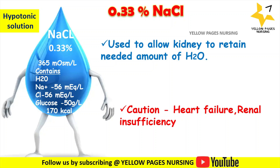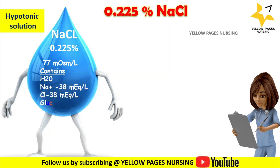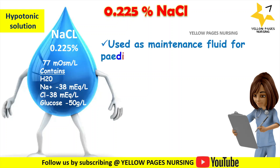The next example is 0.225% Sodium Chloride, also known as 5% Dextrose in 0.225% Sodium Chloride. Its osmolality is 77 milli-osmol per liter, containing water, sodium, and chloride at 38 mEq/L and glucose 50 grams per liter. It is used as a maintenance fluid for pediatric patients, as it is the most hypotonic fluid available, and is typically administered with dextrose to increase tonicity.